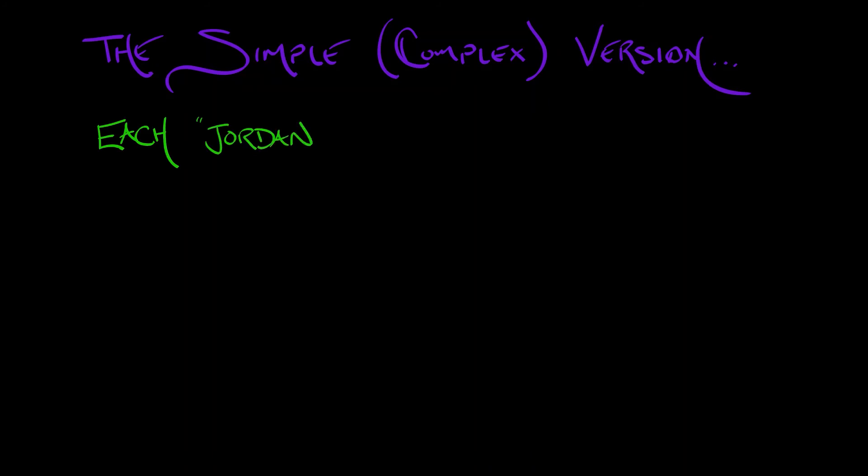Now, the interesting question is: what are these diagonal blocks in the Jordan form? Here is the simple version. Each Jordan block Jᵢ is of the following form.